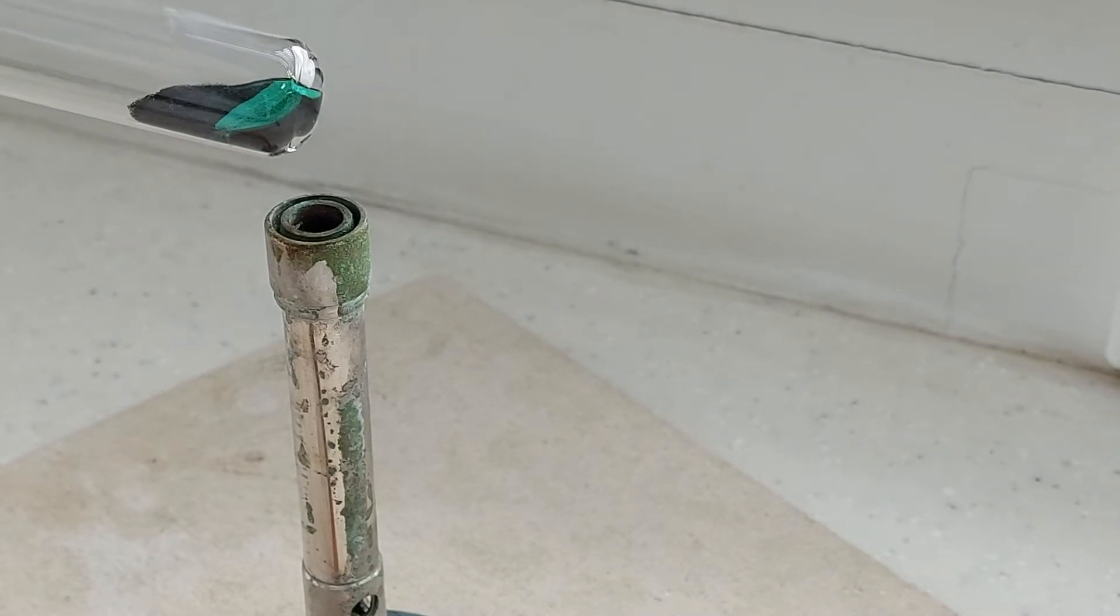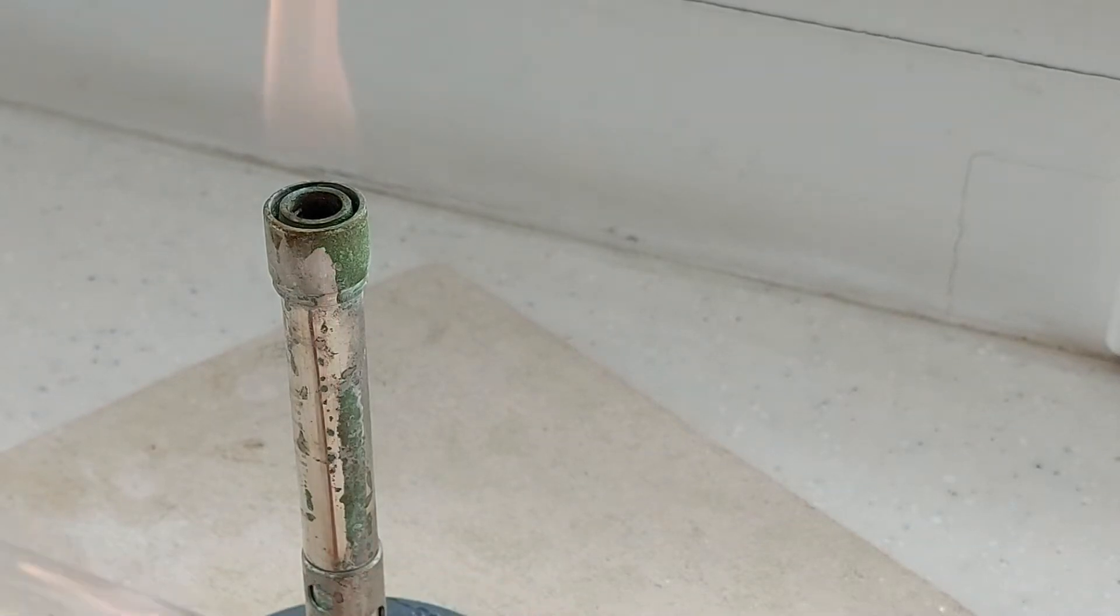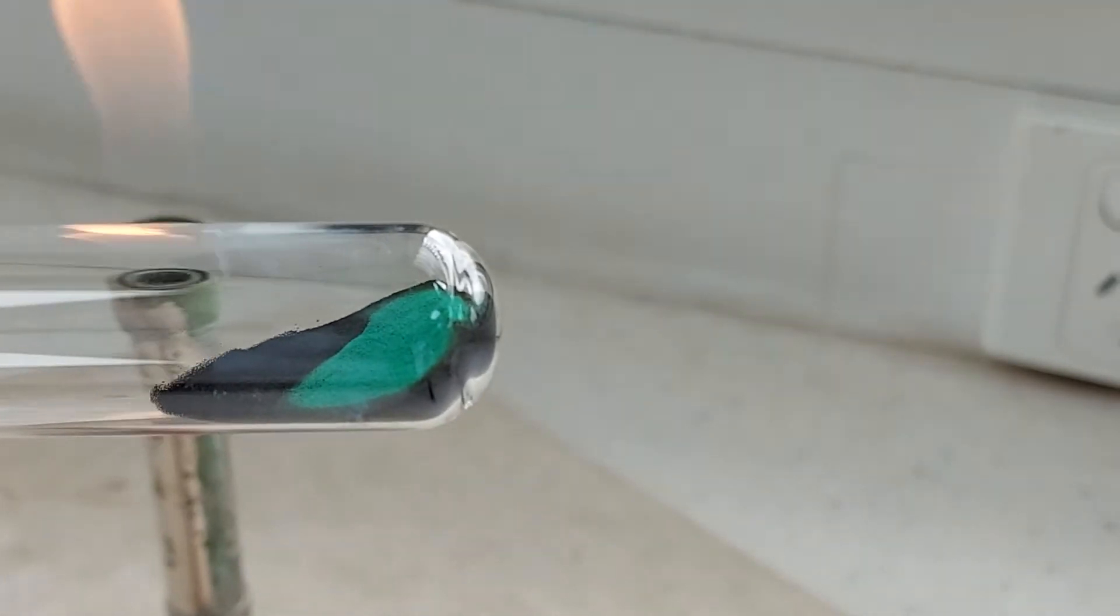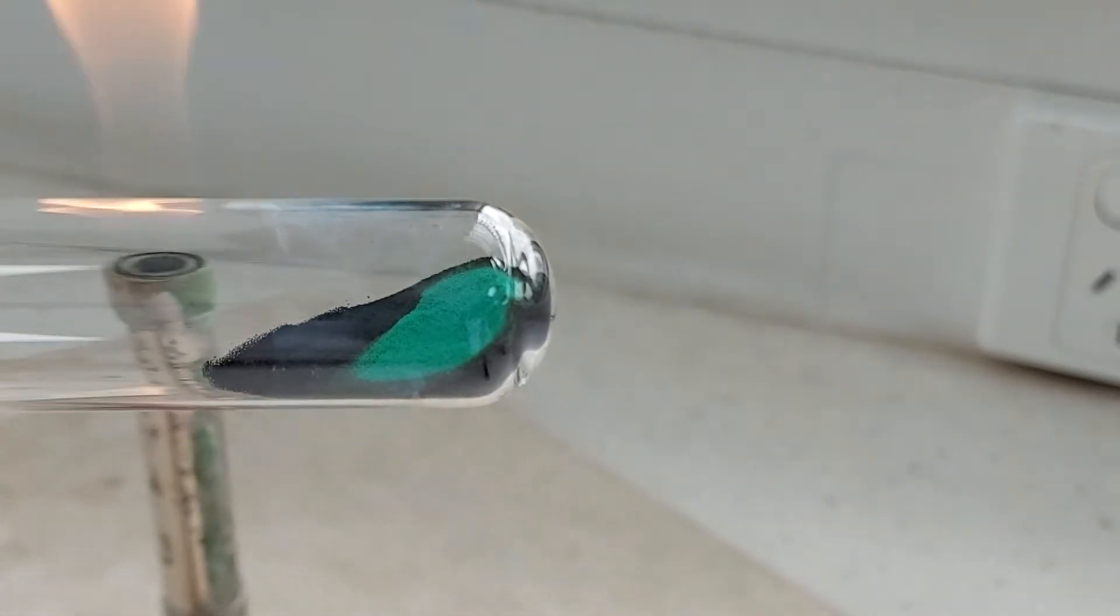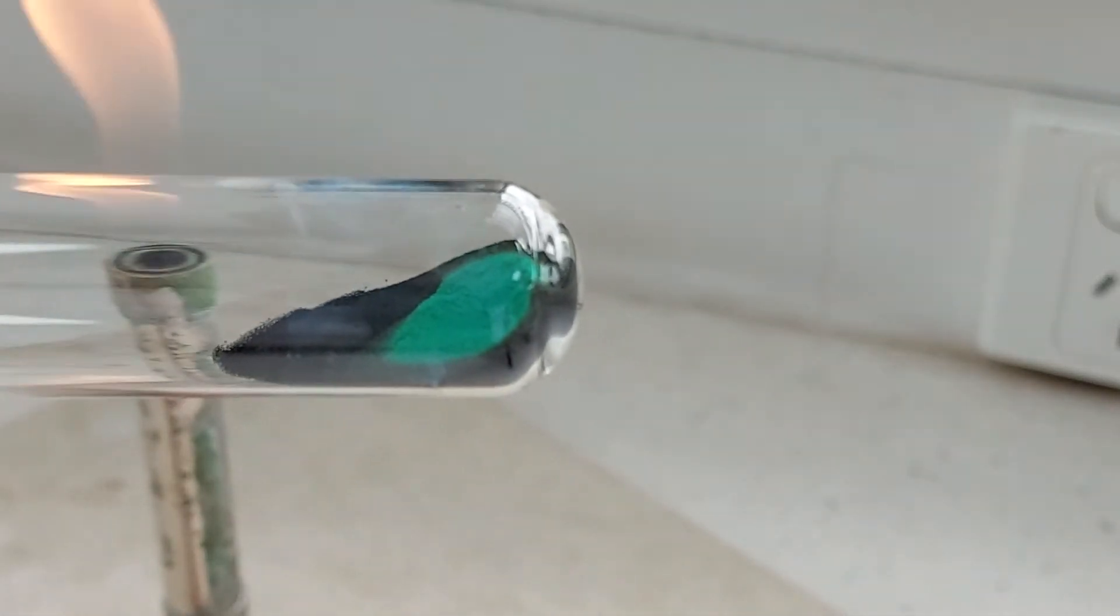I'll just leave it there so that you can see the contrasting colors. So that green stuff that you see there is still the copper carbonate and the black stuff that you see is the copper oxide.